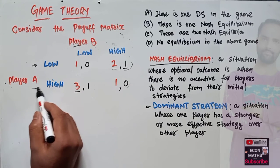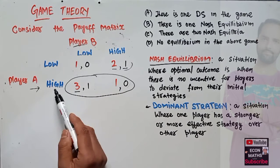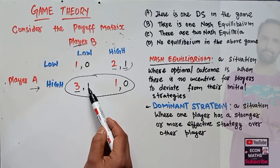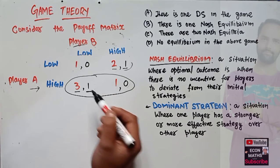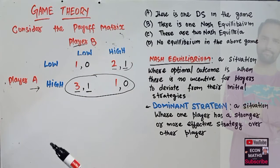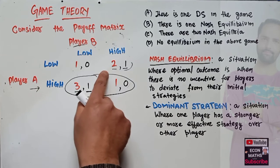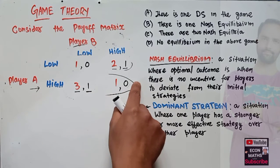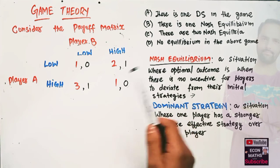Now let us see what happens when Player A chooses high. Player B has two options: low or high. Playing low gives Player B a greater payoff than playing high, so Player B will choose low. Again, Player B's strategy changes when Player A's strategy changes, so Player B has no dominant strategy either. This game has no dominant strategy.